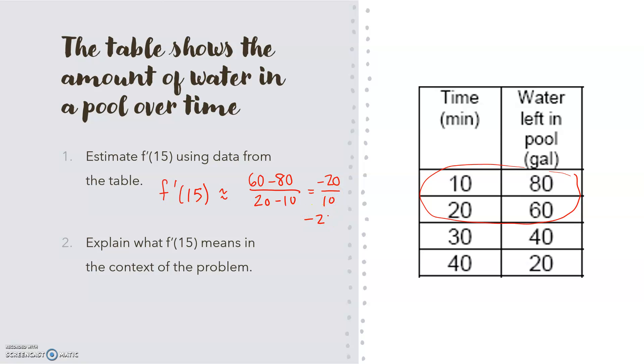Then explain what f prime of 15 means in the context of the problem. At 15 minutes, the pool is losing 2 gallons per minute.